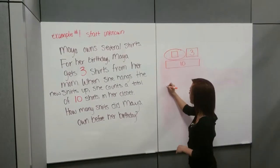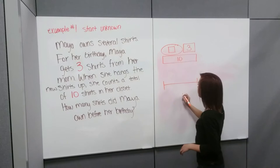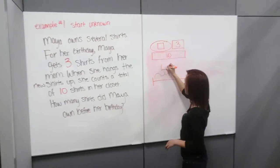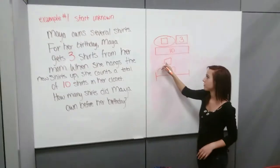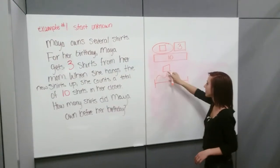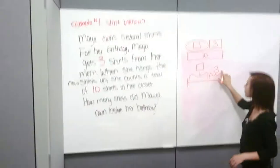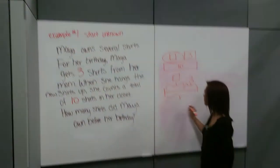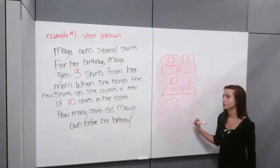And then if we wanted to draw a number line, we'd draw our line. For the first chunk, we're just going to put a box there because we don't know what she began with — we don't know what the starting number was. And then for our second chunk, we put a three because we know that she got three more shirts. And then for the entire number line, we put ten because we know that at the end she had a total of ten shirts.